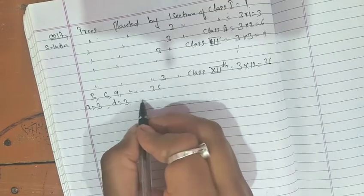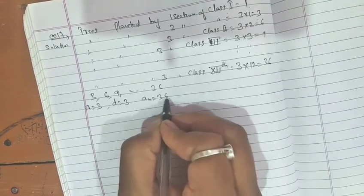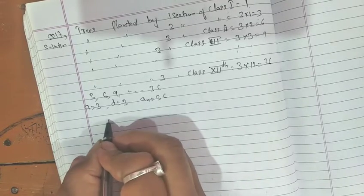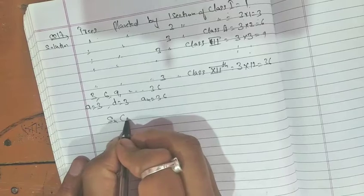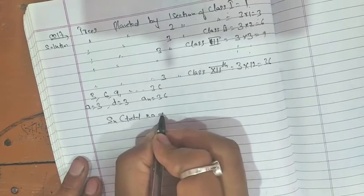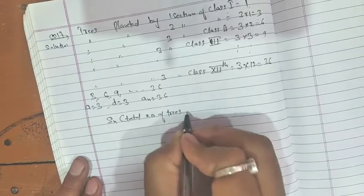We need to find the total number of trees planted, so we need to find Sn. Sn is the total number of trees planted.